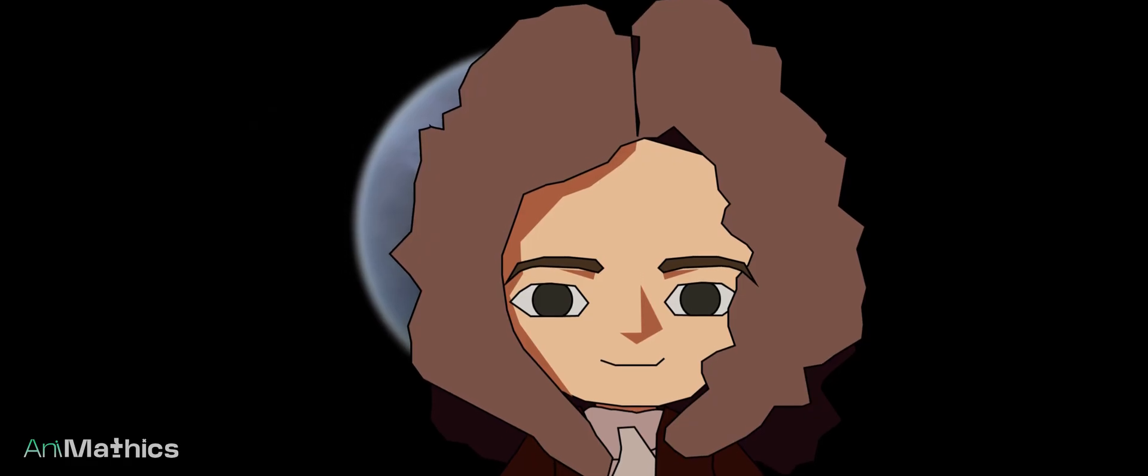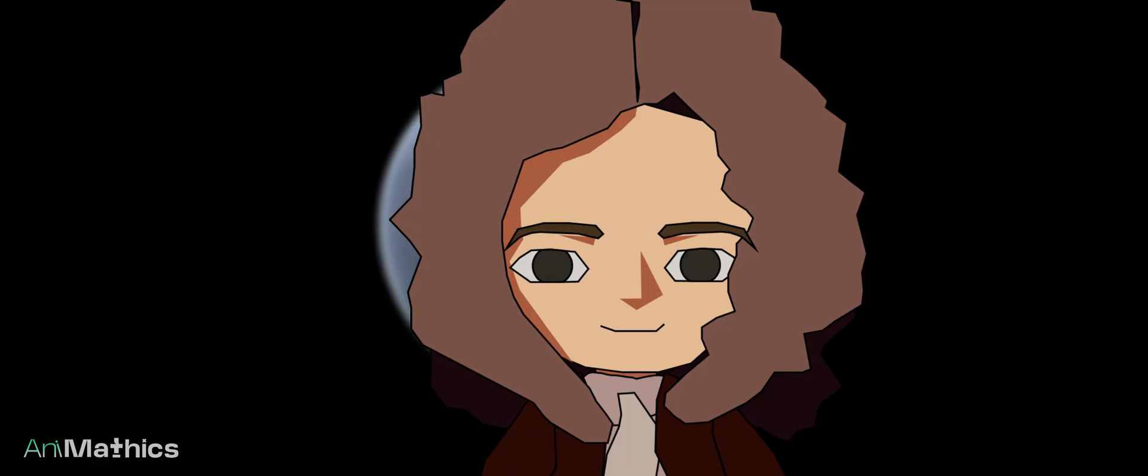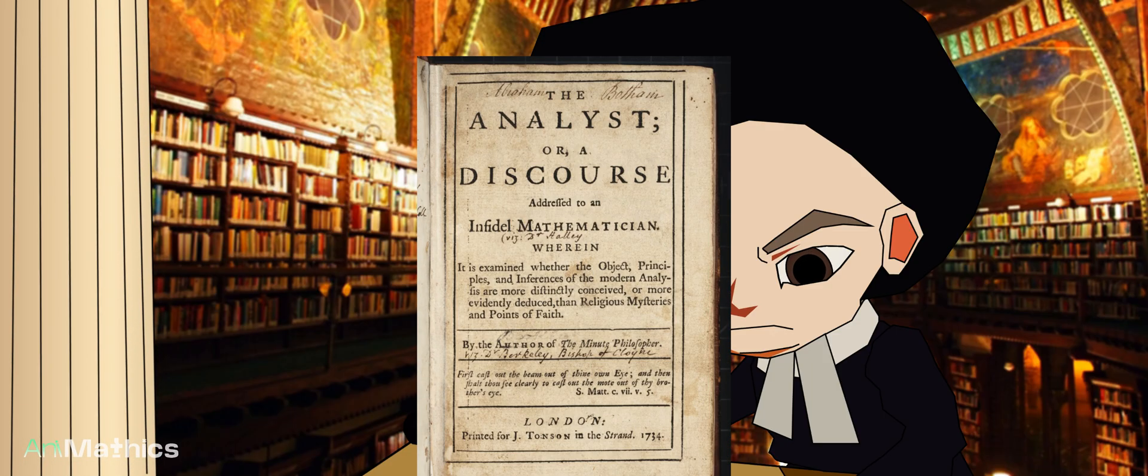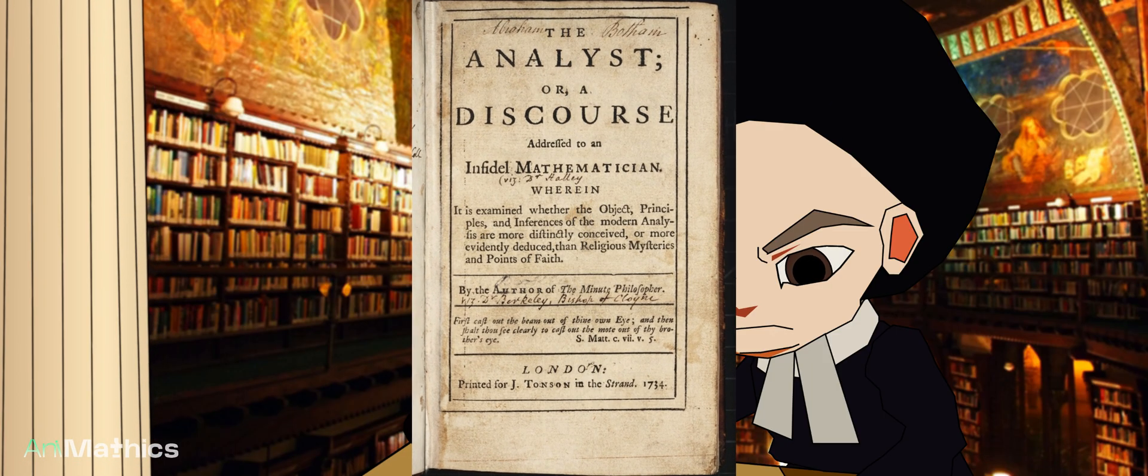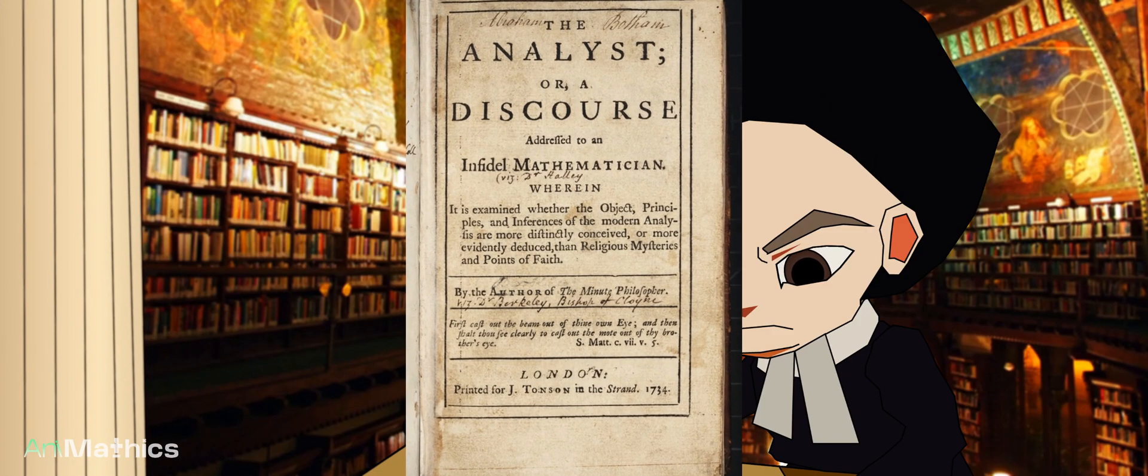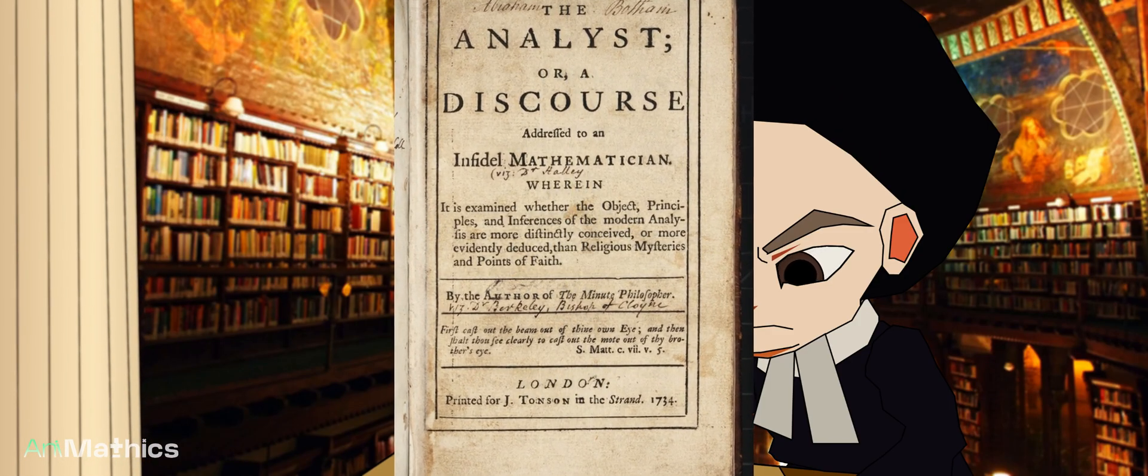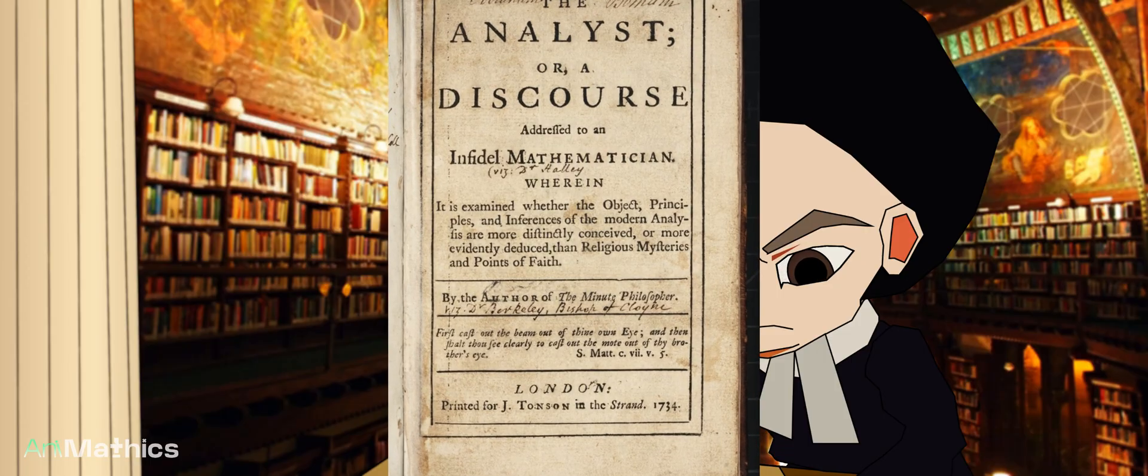But it wasn't until the mocking remarks of the astronomer Sir Edmund Halley appeared that Berkeley decided to write The Analyst. This work was crafted as a satire, attacking the foundations of mathematics with the same force and style that the freethinkers used against religious truths.